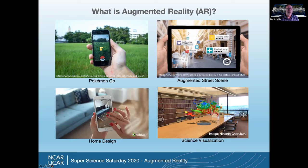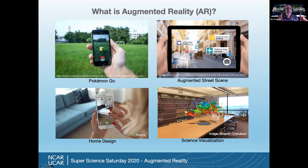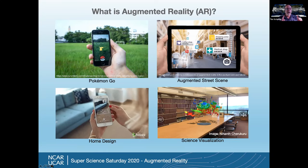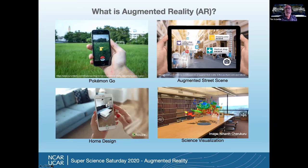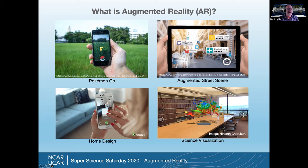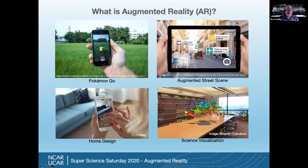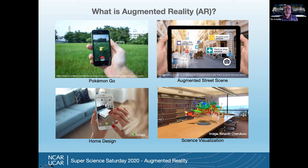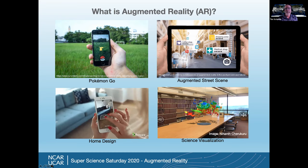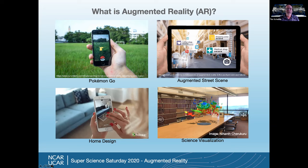There are a lot of ways to use augmented reality. For example, you could be walking down a city street, point your mobile device's camera along the street or at a building, and you can see what businesses are in that area, where the coffee shops are, or maybe a shopping center. Another example is for home design — maybe you bought a new coffee table and want to see what it looks like in your living room before you buy it.